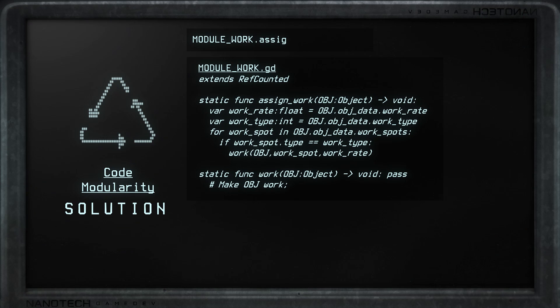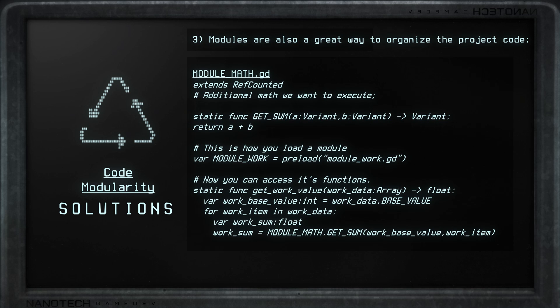The main idea with code modularity as a principle is to build static scripts that will be loaded and treated as resources by other objects to execute actions, functions, or behaviors — passing any variables as arguments to those functions. This allows you to build isolated code blocks and reuse them anywhere, anytime. There are some trade-offs which I'll talk about near the end of the video, but this is the main principle and the foundation for the other building blocks.